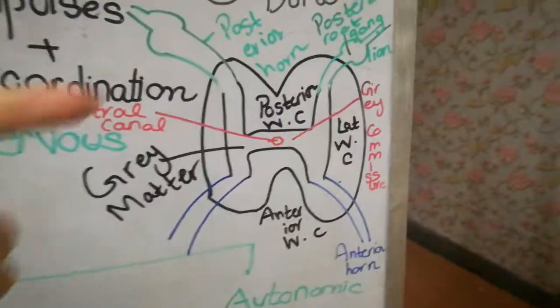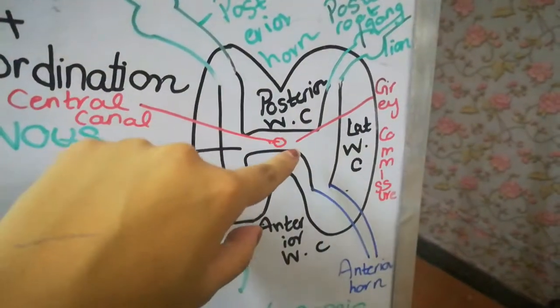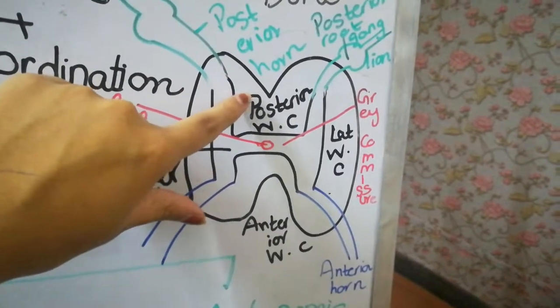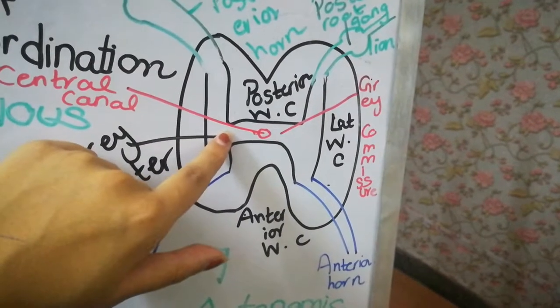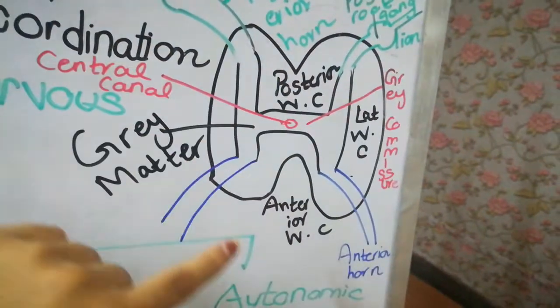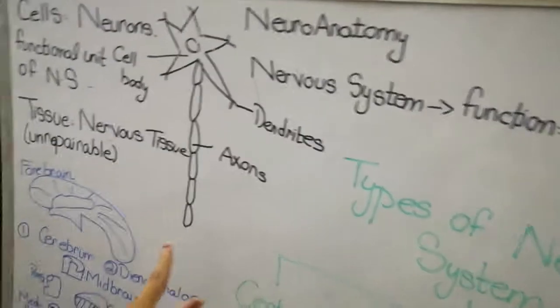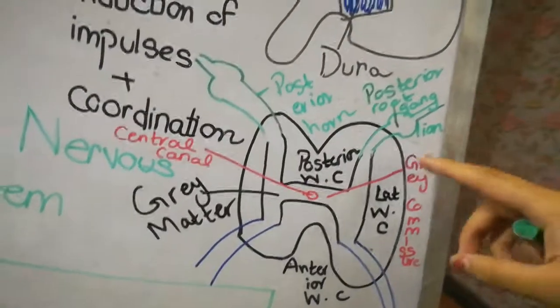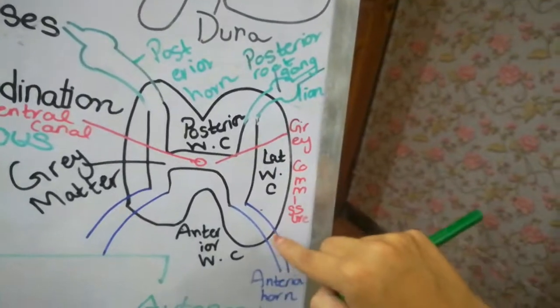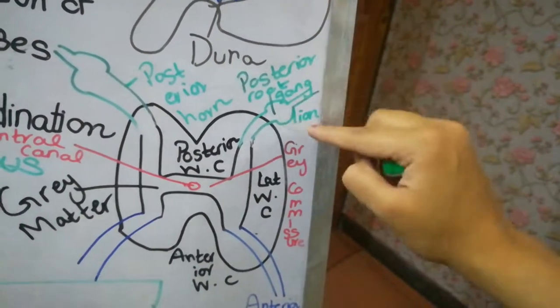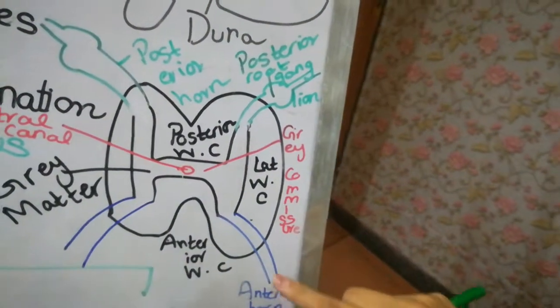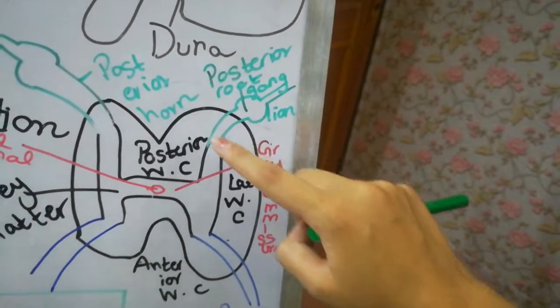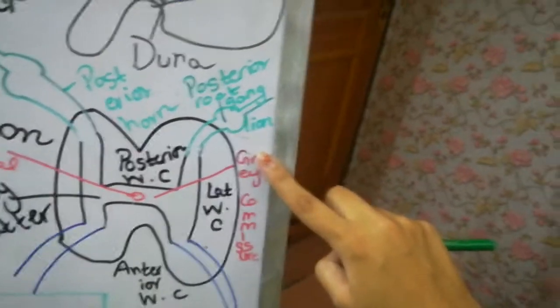Coming to the cross section of the spinal cord, you can see it consists of two matters. The inside is called the gray matter and the outside is called the white matter. Gray matter is due to the collection of cell bodies, and the collection of axons leaving gives a white appearance — that is the white matter. As axons leave the brain and enter the spinal cord, the outside is white and the inside is gray. It consists of two horns or roots: the posterior horns, which conduct impulses from the brain towards the spinal cord, and the anterior, which takes impulses away from the spinal cord. There is also a posterior root ganglion — a swelling in the posterior root.